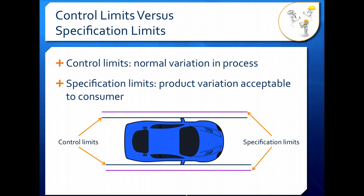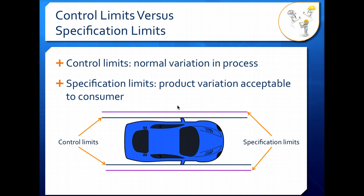An easy way to think about this is a car in a parking space. Our control limits — the teal limits — represent how wide our car is. Our car is not getting any skinnier than those limits. So as long as our parking space is at least as wide as the control limits, we can park our car within that space. If we have a parking space the size of the specification limits shown here in purple, our car can completely fit inside those specification lines, so we can park our car comfortably. Our car meets the specifications.